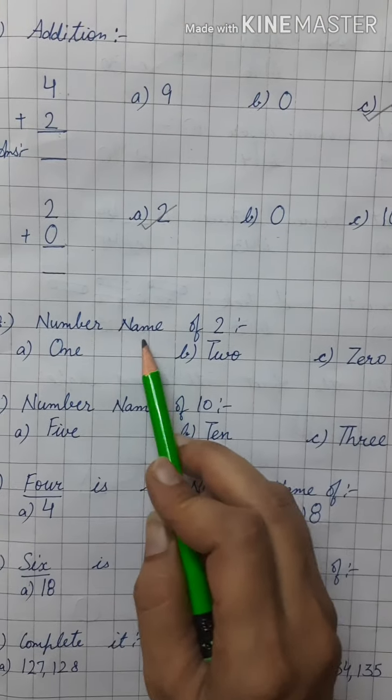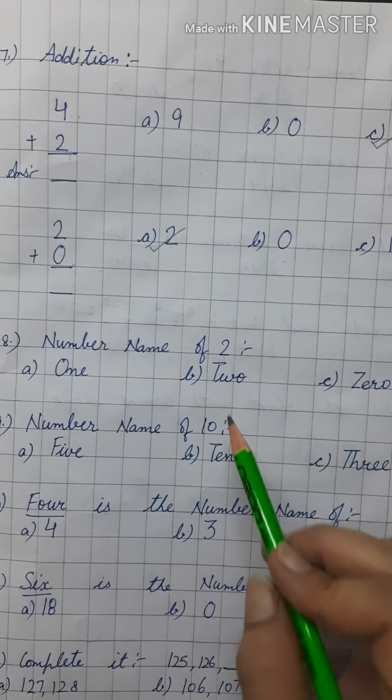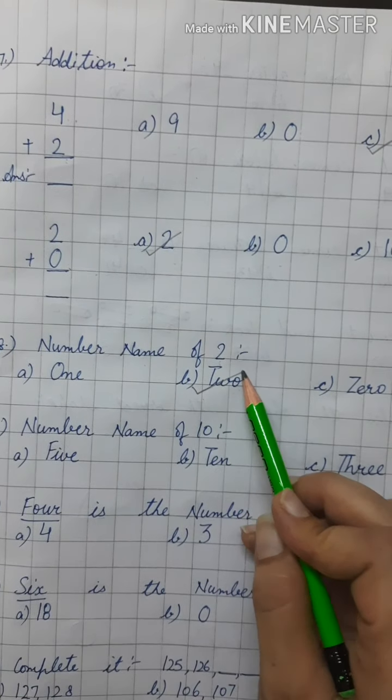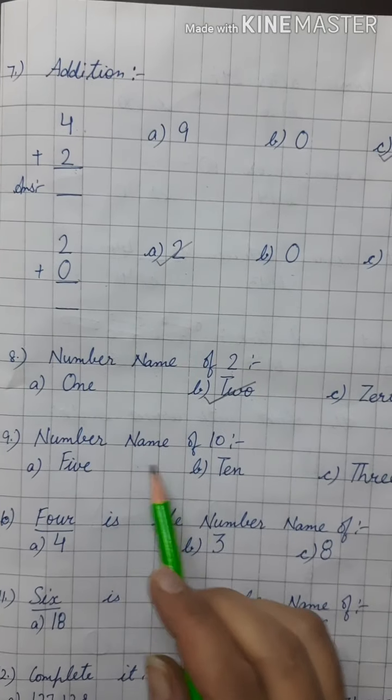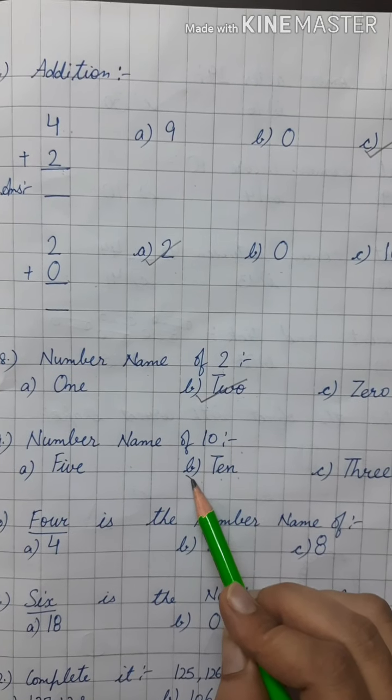Now, next question is number name of 2. Number name means spelling. T, W, O, 2. So, we will tick the option B. Number name of 10. T, E, N. So, we will tick the option B.